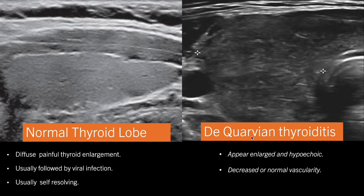Another important pathology is De Quervain's thyroiditis. As we know, De Quervain's thyroiditis is a painful condition in which the thyroid lobe is diffusely enlarged. It is generally followed by a viral infection, and in the majority of cases it will be self-resolving. On ultrasound, the thyroid gland will be enlarged and hypoechoic due to acute inflammation and edema.